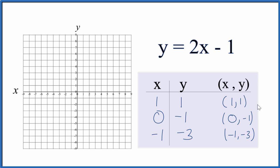So these are the points that we'll graph for the equation y equals 2x minus 1. x is 1, y is 1. So 1, 1. x is 0, y is negative 1. 0, negative 1.